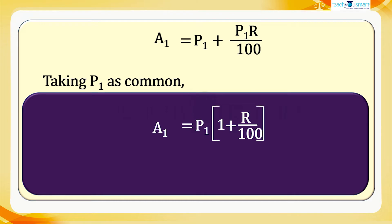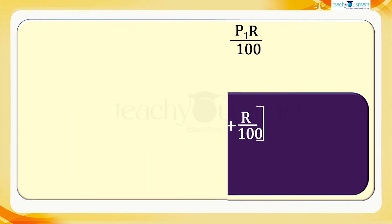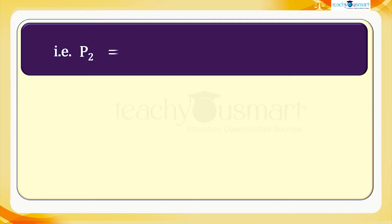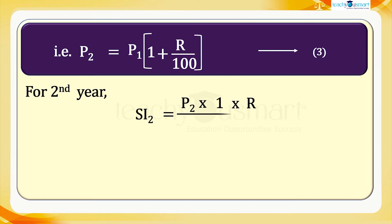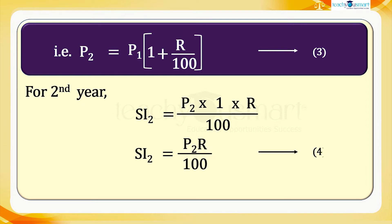To calculate compound interest, we take A₁ at the first year as the principal of the second year, P₂. That is, P₂ equals P₁ × (1 + r/100) — equation 3. Now find the simple interest for the second year: SI₂ equals P₂ × 1 × r divided by 100, which gives SI₂ equals P₂r divided by 100 — equation 4.